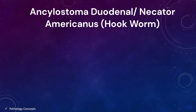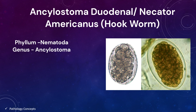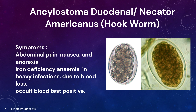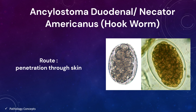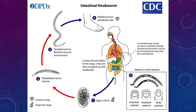Hookworm includes Ancylostoma duodenale and Necator americanus. The phylum is Nematoda, genus is Ancylostoma. Symptoms include abdominal pain, nausea, anorexia, iron deficiency anemia in heavy infections due to blood loss, and positive occult blood test in stool. The infection also causes protein malnutrition, eosinophilic pneumonia, and urticarial rash. The route of infection is through the skin. Eggs are passed in the feces, rhabditiform larvae hatch and convert into filariform larvae in the environment. The filariform larva is the infective stage and can penetrate the skin.